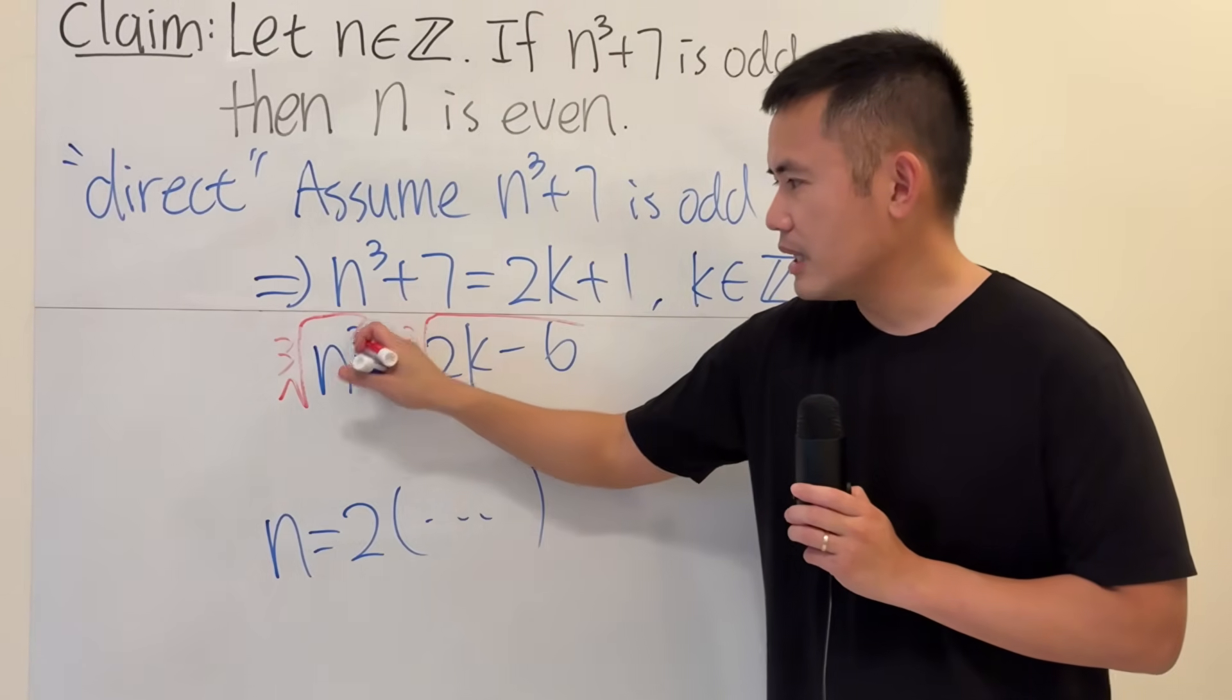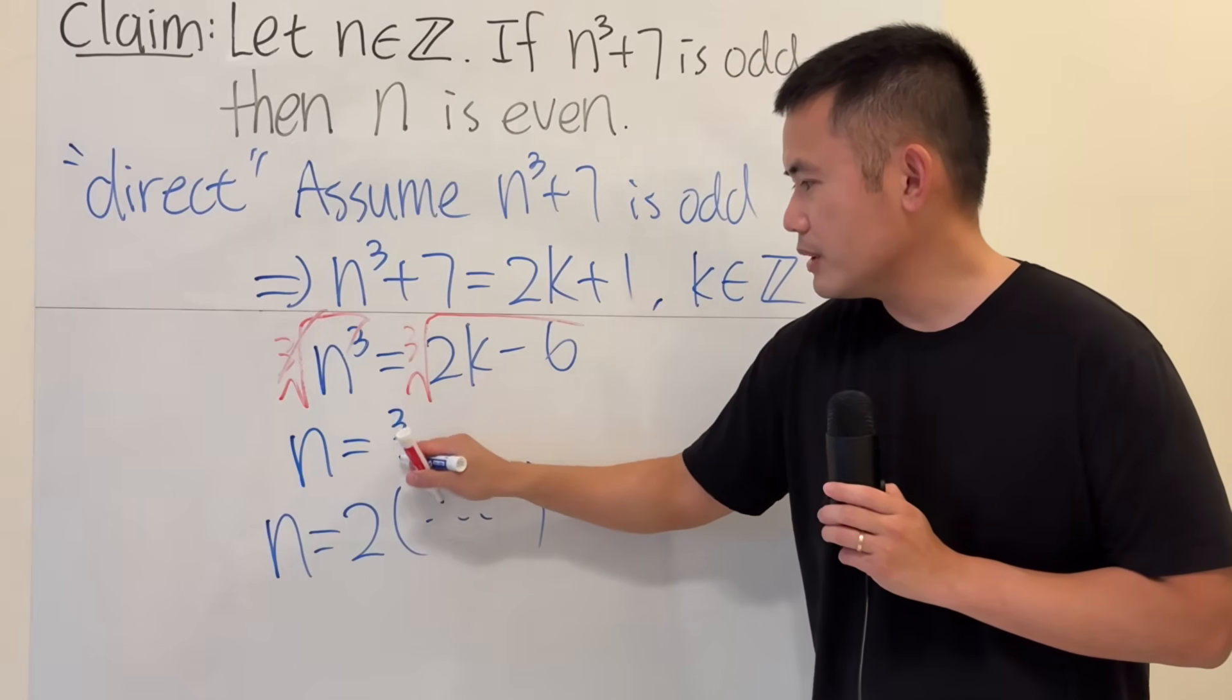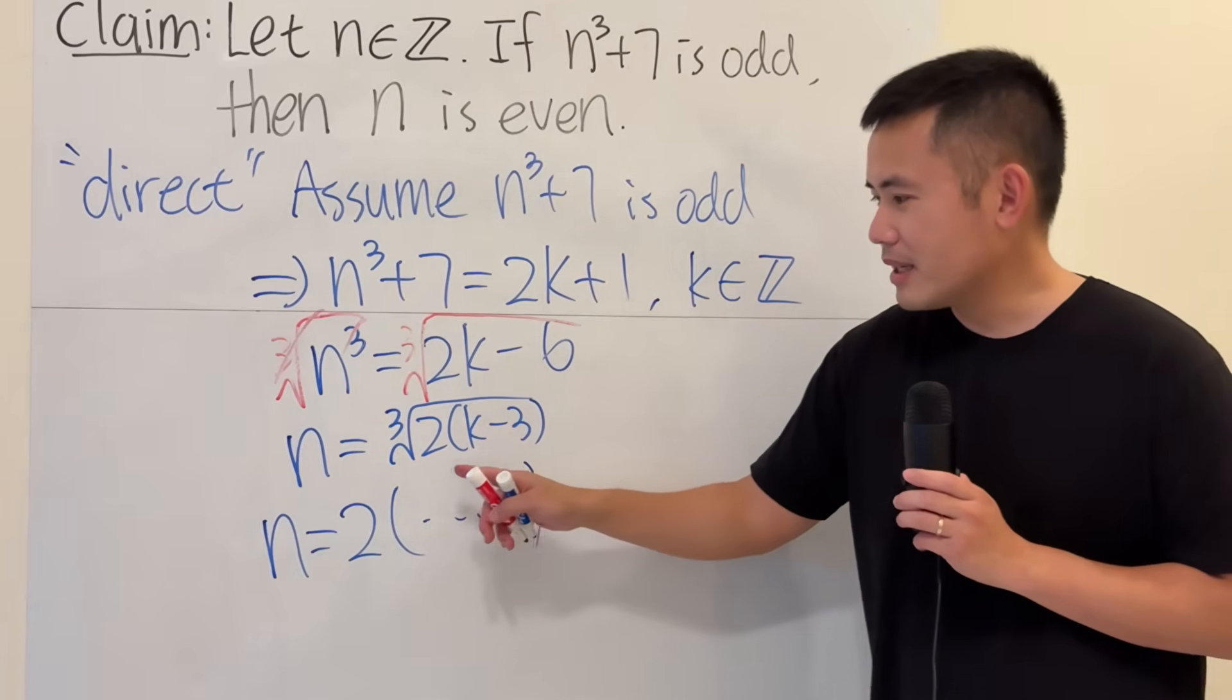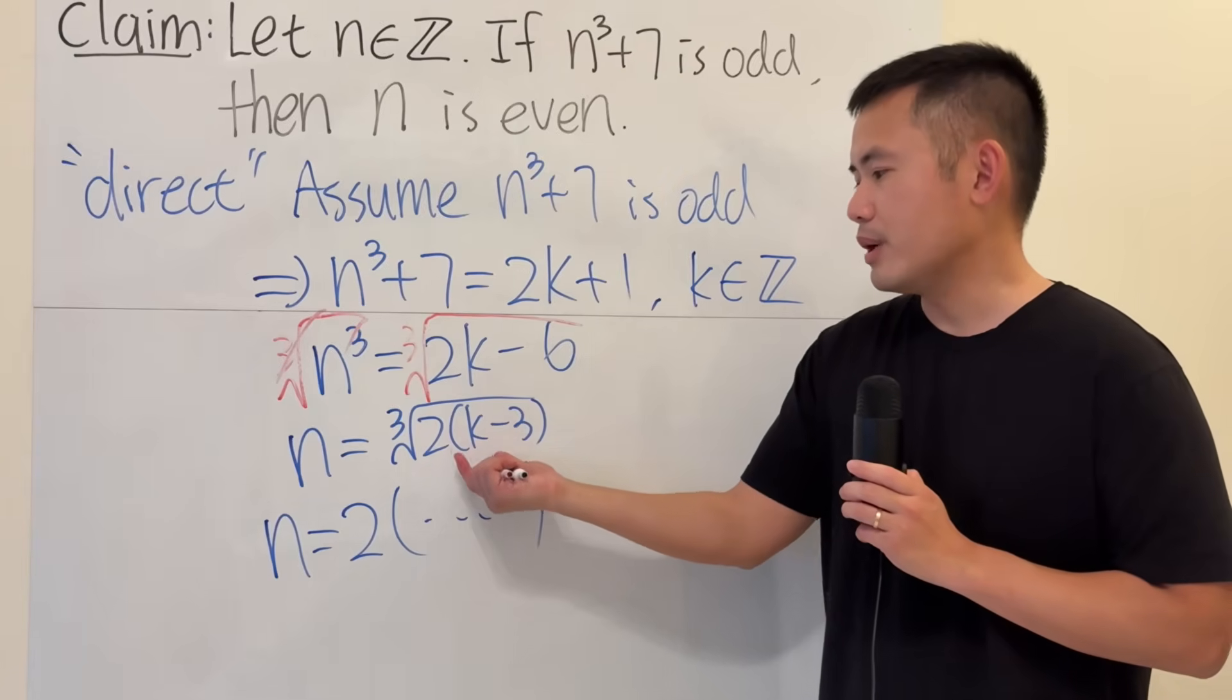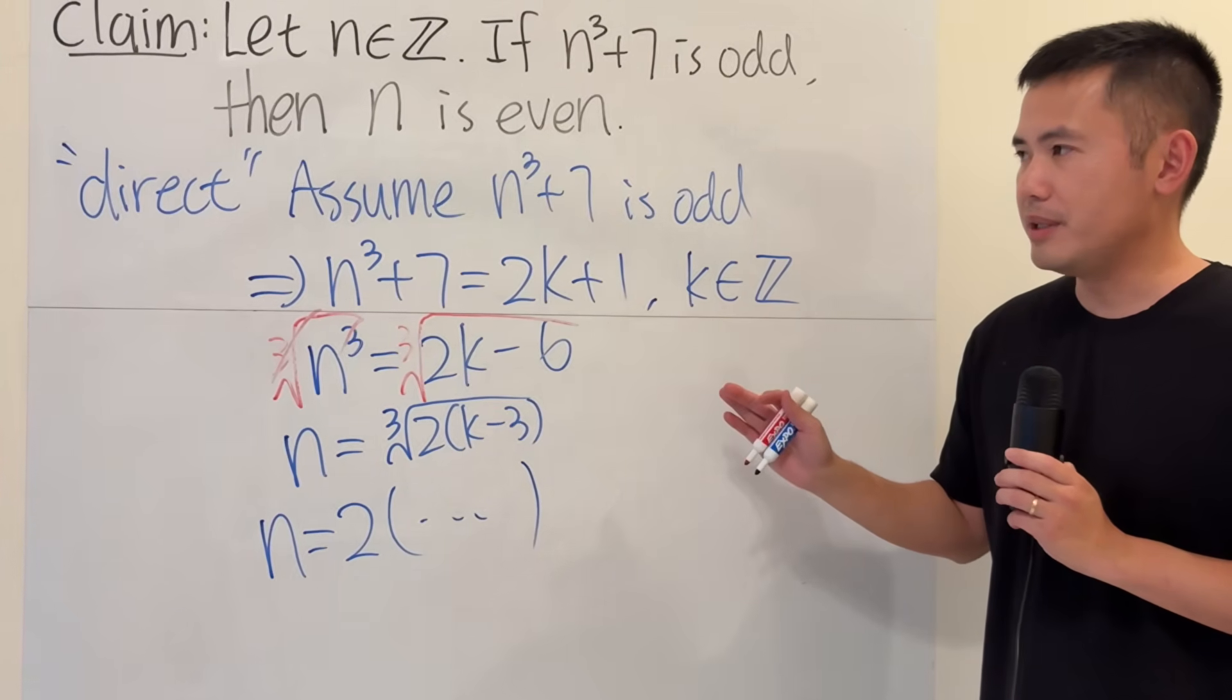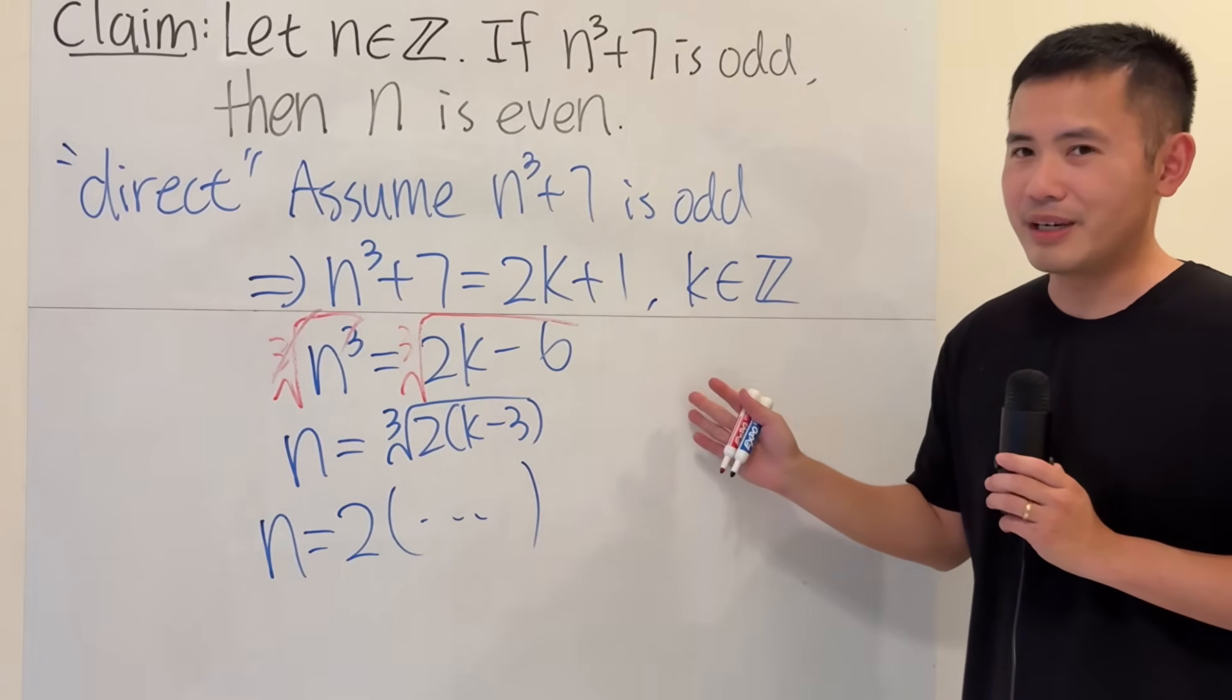And as you can see, we get the n by itself, but we have the cube root. And then if you factor out the 2, this right here. No, it's not going to do it, because it's not 2 times an integer. Because we have the cube root, we have no idea what this is. It's not clear. So, this is where the direct proof is going to be not so easy. I'm actually not sure about how you can go about doing this directly.